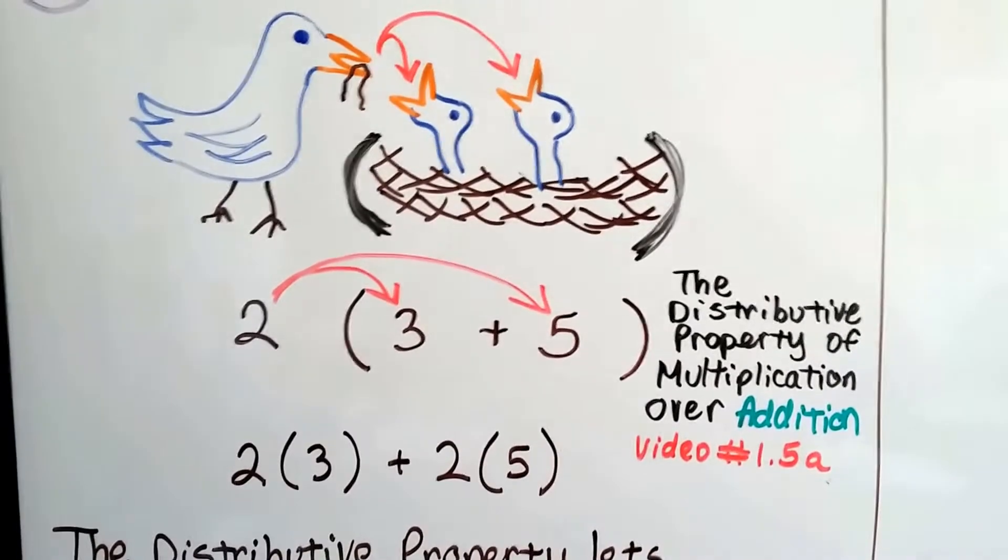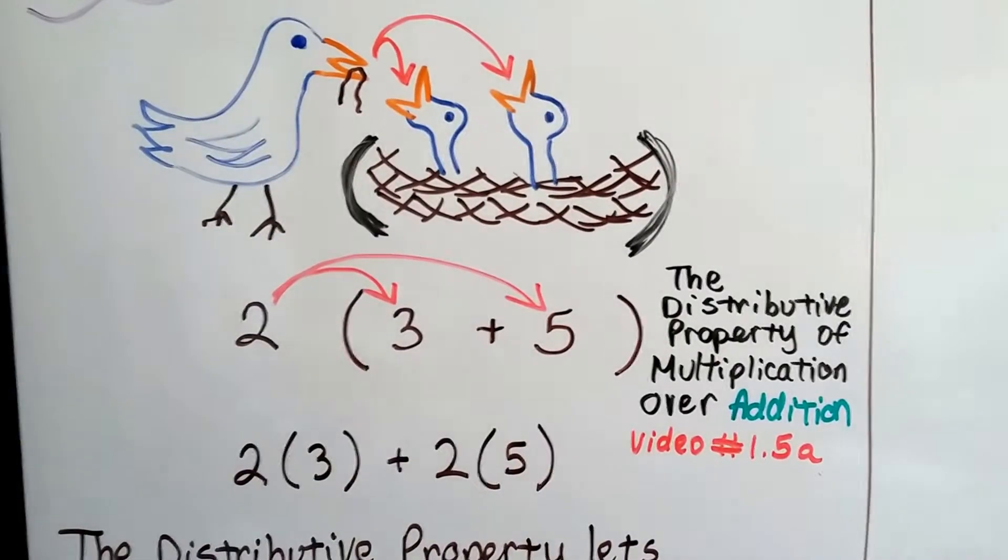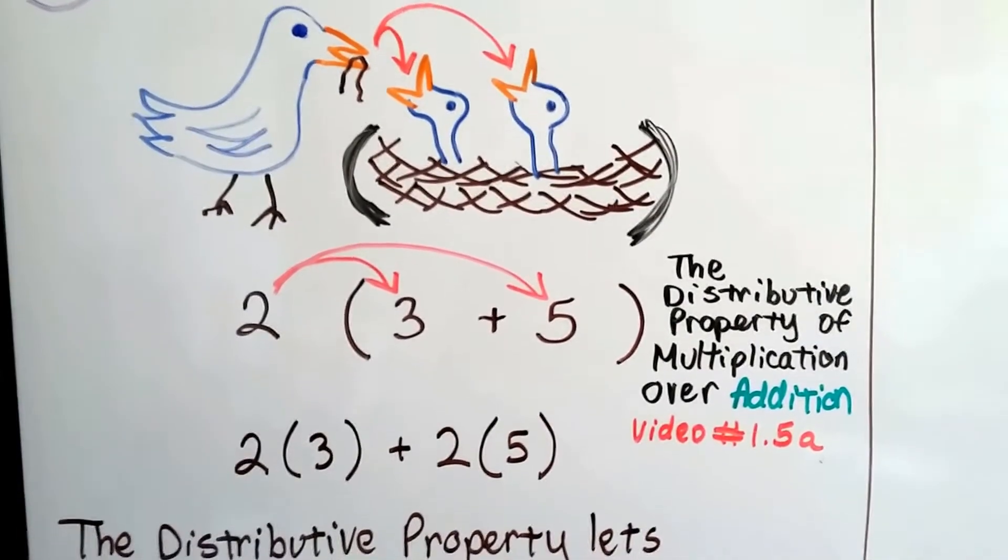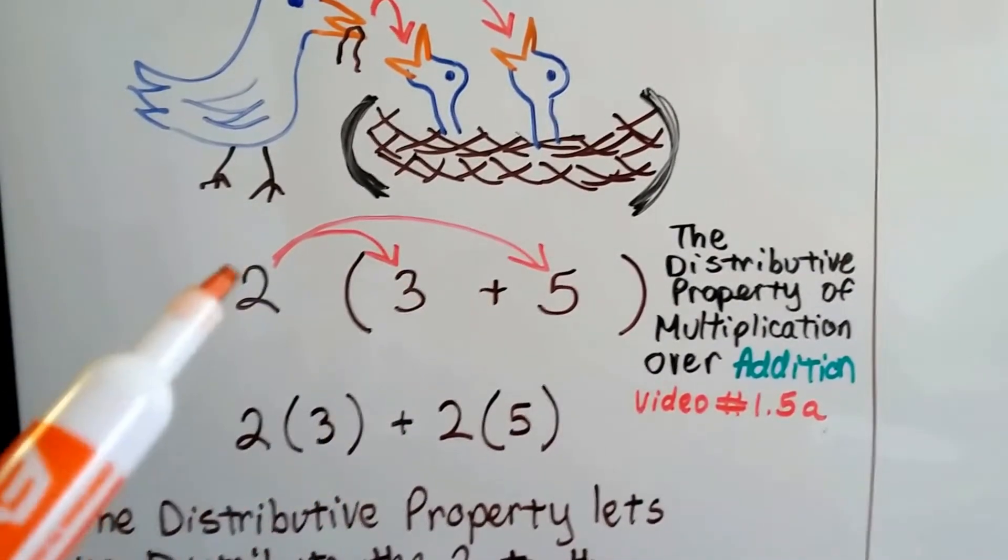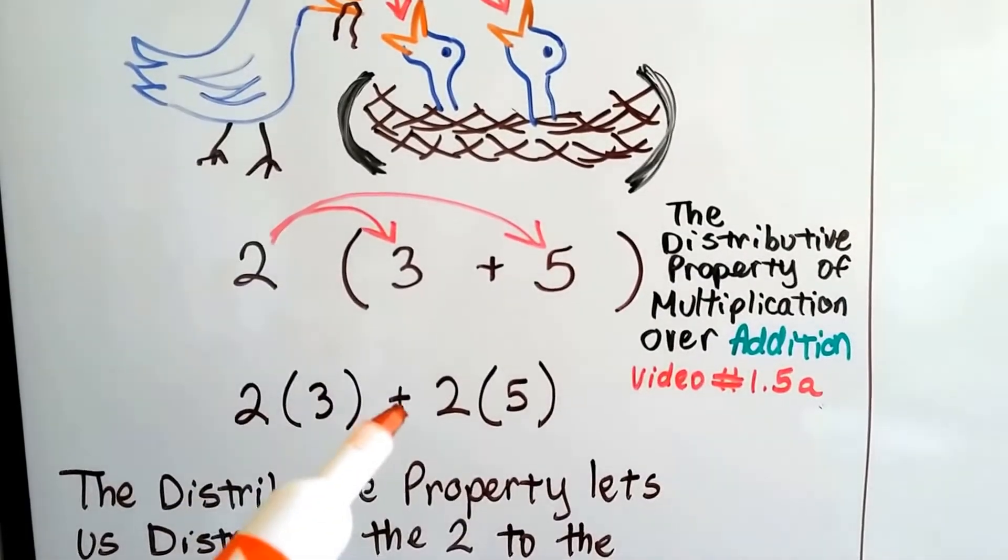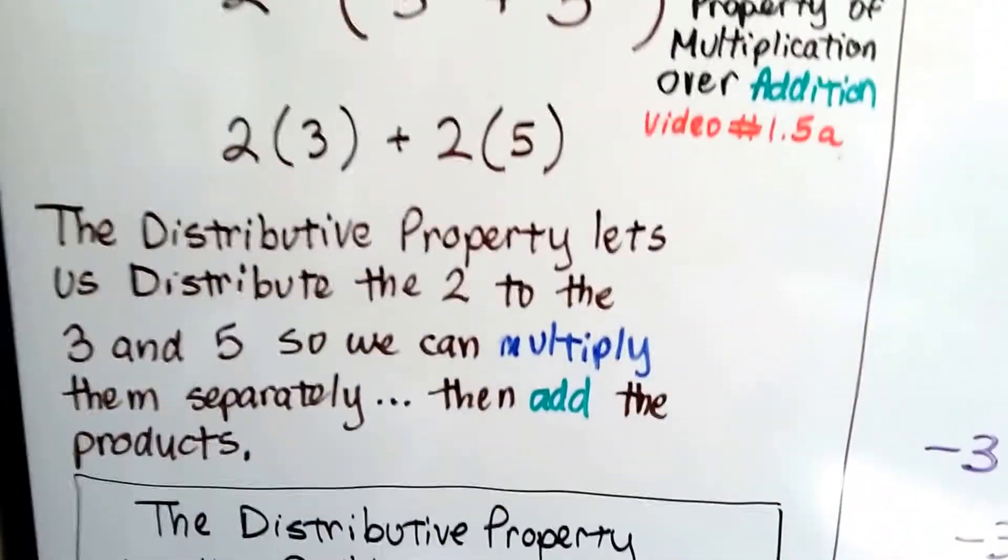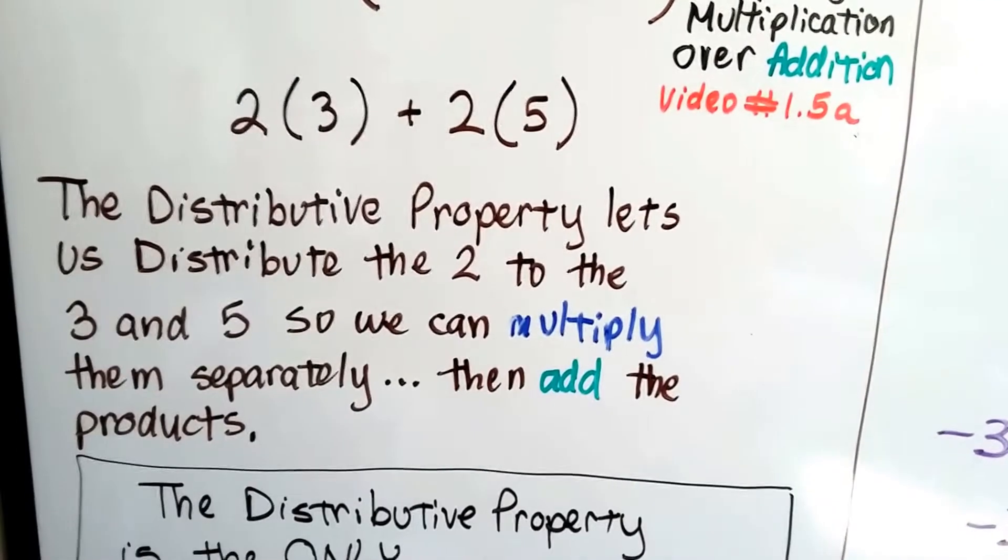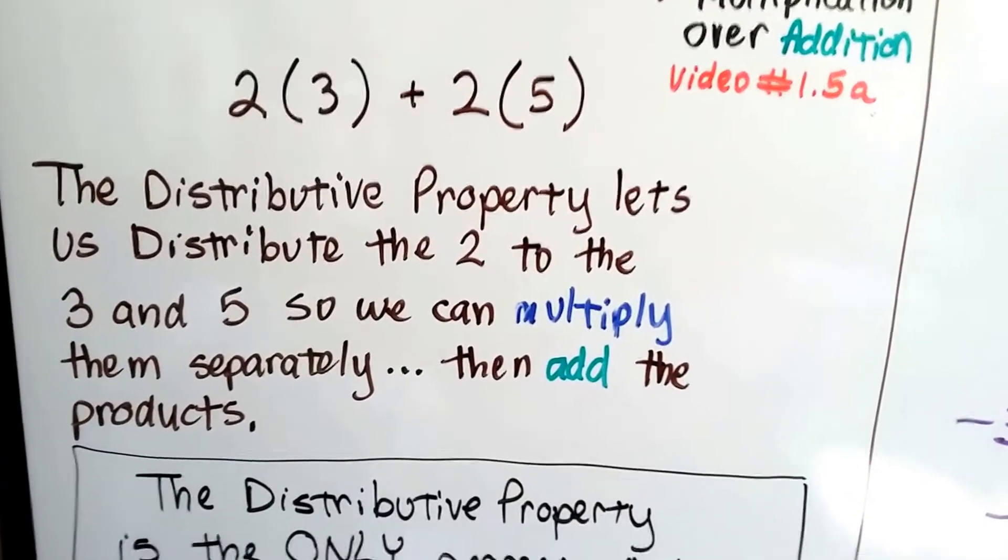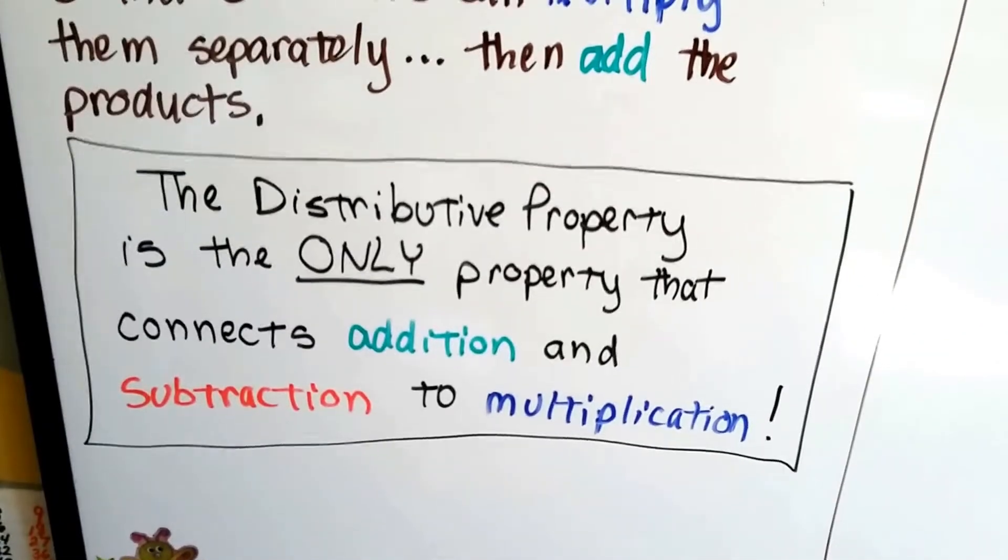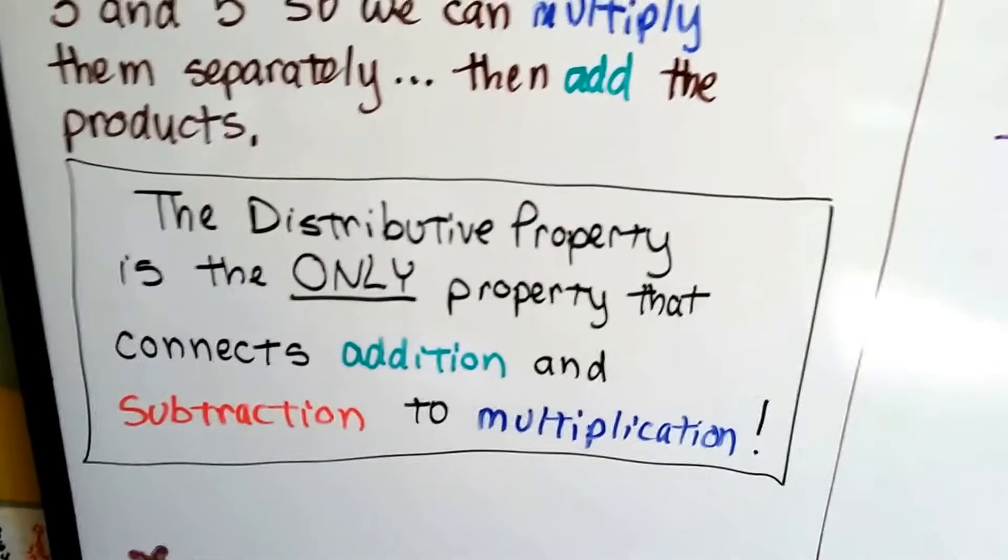And basically all it's saying is this mother is taking turns feeding her babies. Nobody starves. She makes sure each baby gets some food. Well, that's what the 2 does. The 2 gets multiplied to the 3, and then we add it to 2 times 5. 2 times 3 is 6, plus 2 times 5 is 10. 6 plus 10 is 16. The distributive property lets us distribute that 2 to the 3 and the 5 so we can multiply them separately and then add the products. And did you know the distributive property is the only property that connects addition and subtraction to multiplication? Yep, it is.